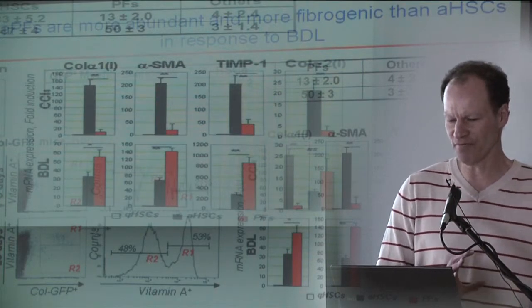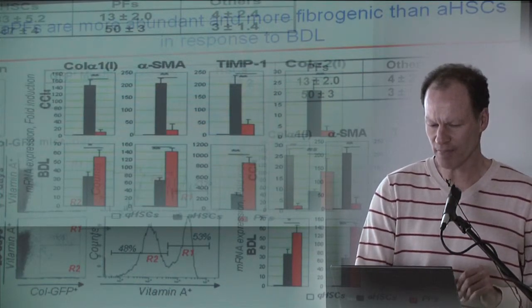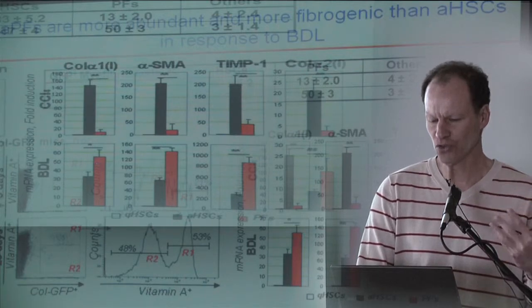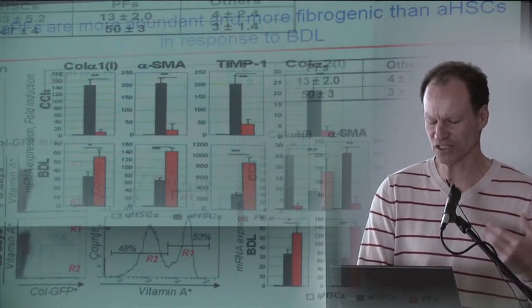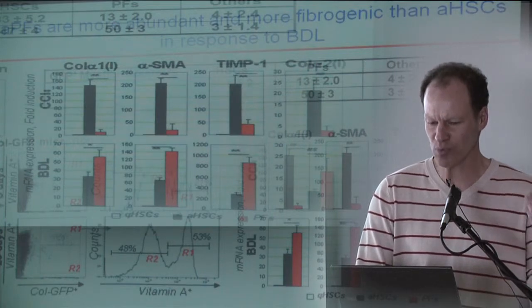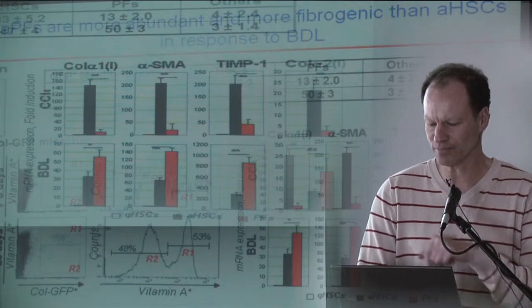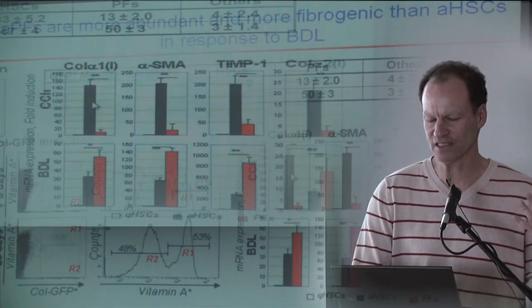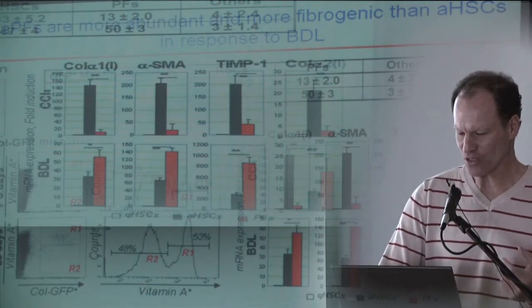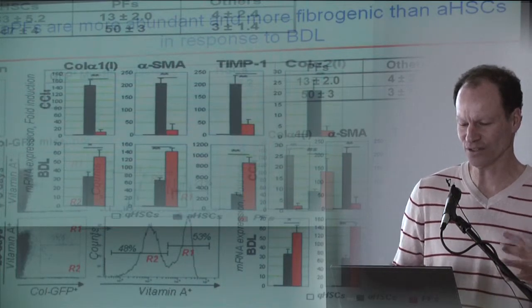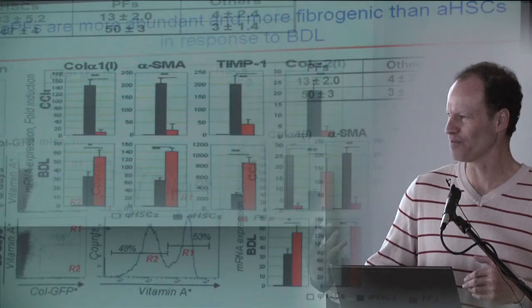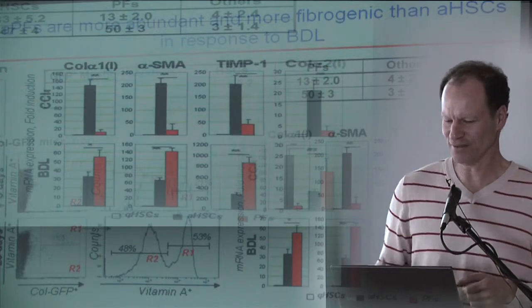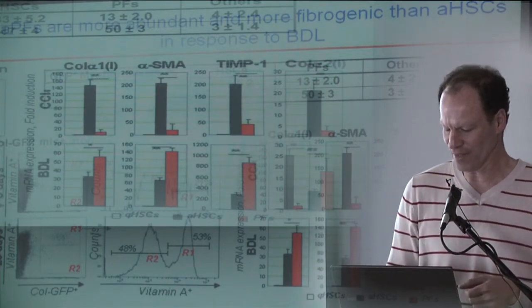If you purify vitamin A positive and vitamin A negative cells and look at them in bile duct ligation, there's a major contribution from the portal fibroblasts to the fibrogenic gene expression: type 1 collagen, alpha muscle actin, TIMP1, type 2 collagen. While in carbon tetrachloride, it's exclusively the hepatic stellate cells. One disadvantage is I can tell you quiescent stellate cells, but I have no technique to purify the original fibroblasts. I'm always talking about activated fibroblasts versus activated stellate cells.